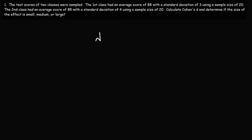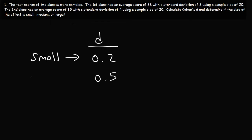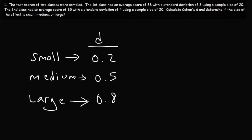You also need to know that a D value of 0.2 means that the effect is small. If the D value is around 0.5, the effect is medium. And a D value of 0.8 or more than 0.8, the effect is large. So you may want to write that down.